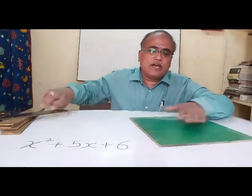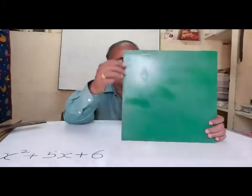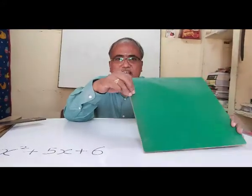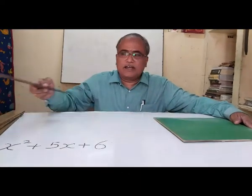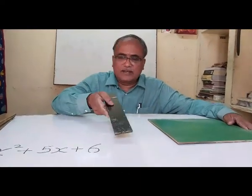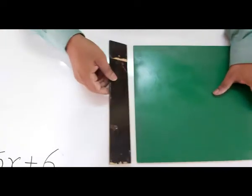For example, you come here. I have a green square. Let us suppose that its side is x. So its area is x square. Now I have taken this black one and this black one is equal to x.